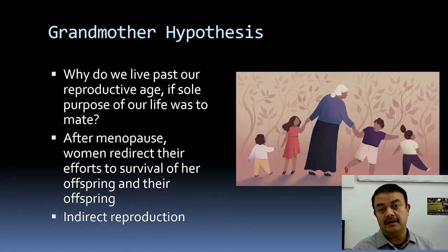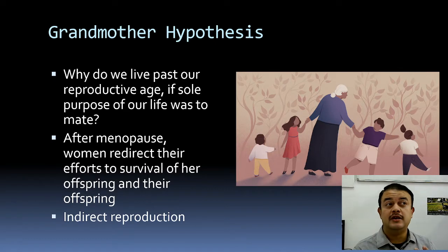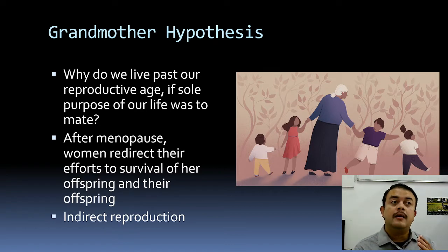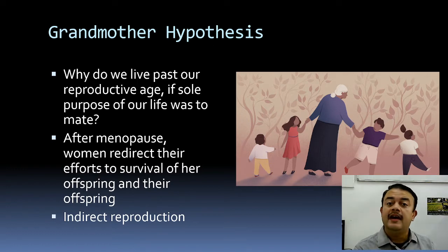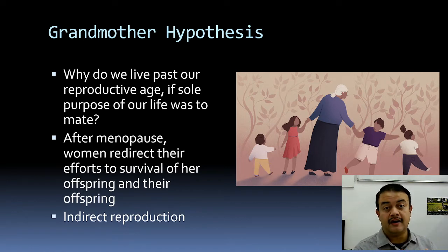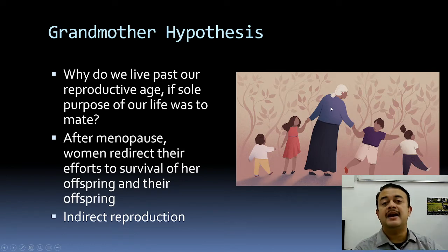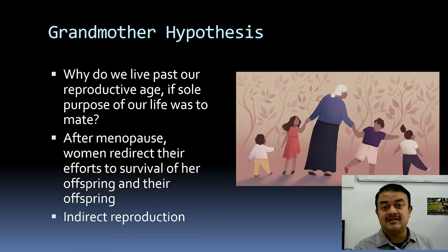Men technically retain fertility even at an advanced age, whereas females undergo menopause and become non-reproductive. That is why the theory is called the grandmother hypothesis. The idea is that after menopause, women redirect their efforts toward the survival of their offspring and grandchildren — investing energy in ensuring their children and grandchildren successfully pass on shared genes.